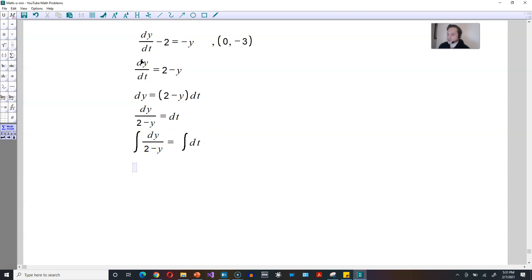Anti-differentiating the left side, that would give you the following: negative ln of (2 - y). And then on the right side, you'd have t + c, where c is the constant. Notice that I'm not focusing too much on the anti-differentiation step. I kind of expect you to fill in that detail.